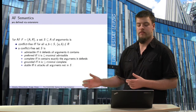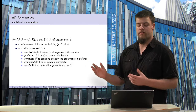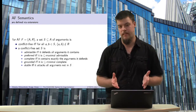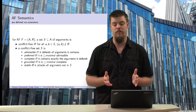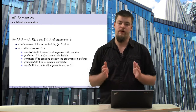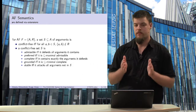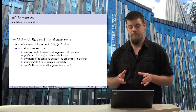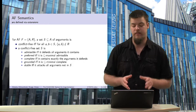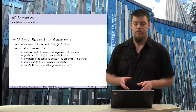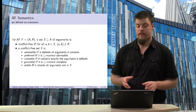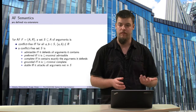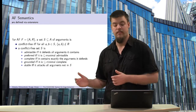Several semantics are common for Dung's argumentation framework. In general, they are based on the conflict-free property, which means a set of arguments is conflict-free if and only if there are no two arguments inside it which attack each other. If a set is conflict-free, we can apply additional properties to get different semantics.